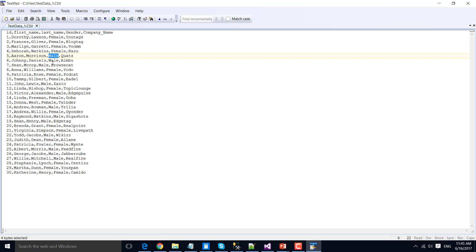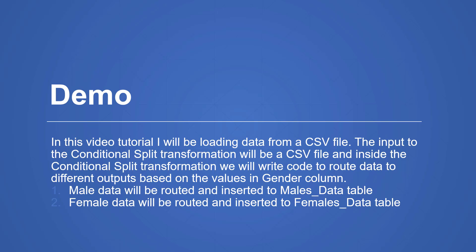If the data is male, then it should be redirected to the males_output table. However, if the data inside the gender column is female, then it should be redirected to another SQL Server table. The input to the Conditional Split Transformation will be the CSV file. Inside the Conditional Split Transformation, we will write the code to route data to different outputs based on the values in the gender column. Male data will be routed and inserted into the males_data table, which we will create while designing the SSIS package.